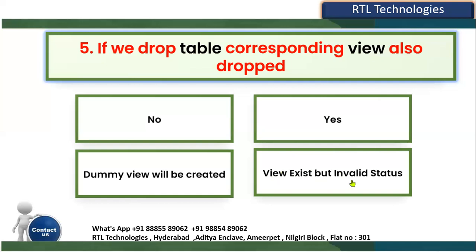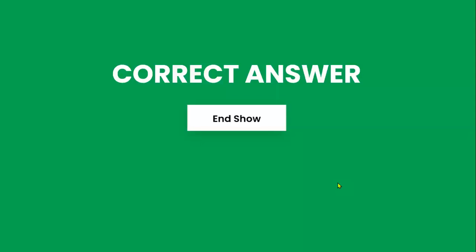To find the status of a view, you can query the ALL_OBJECTS table — where object_name equals the name of your object. This will show the status of any database object, not just views. So the correct answer is: the view exists but has invalid status.